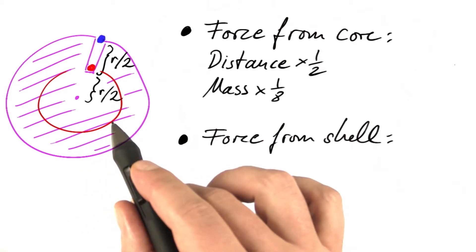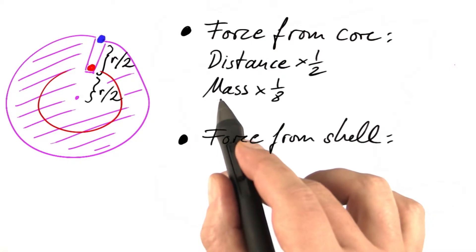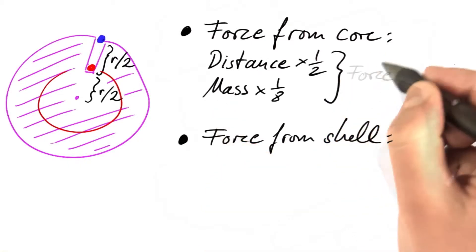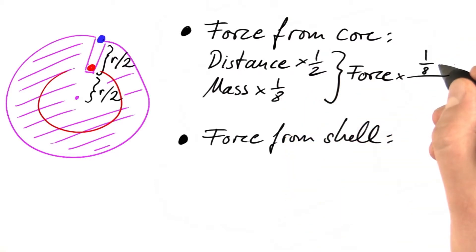We're shrinking the volume to one-eighth and hence the mass to one-eighth of the original value. If we take these two together, the original force will be multiplied by one over eight, because the mass appears in the numerator.